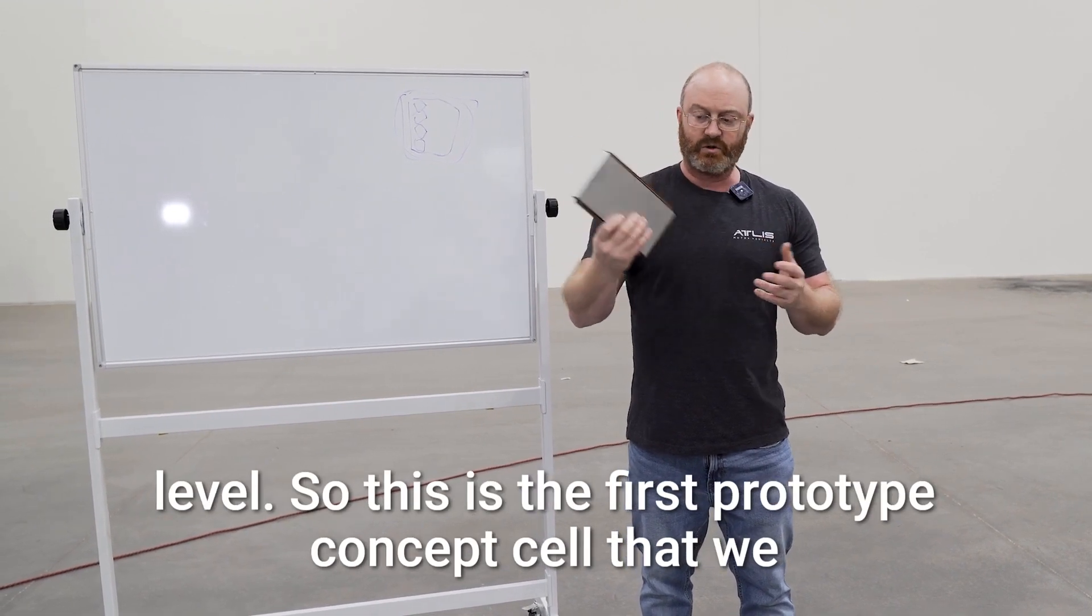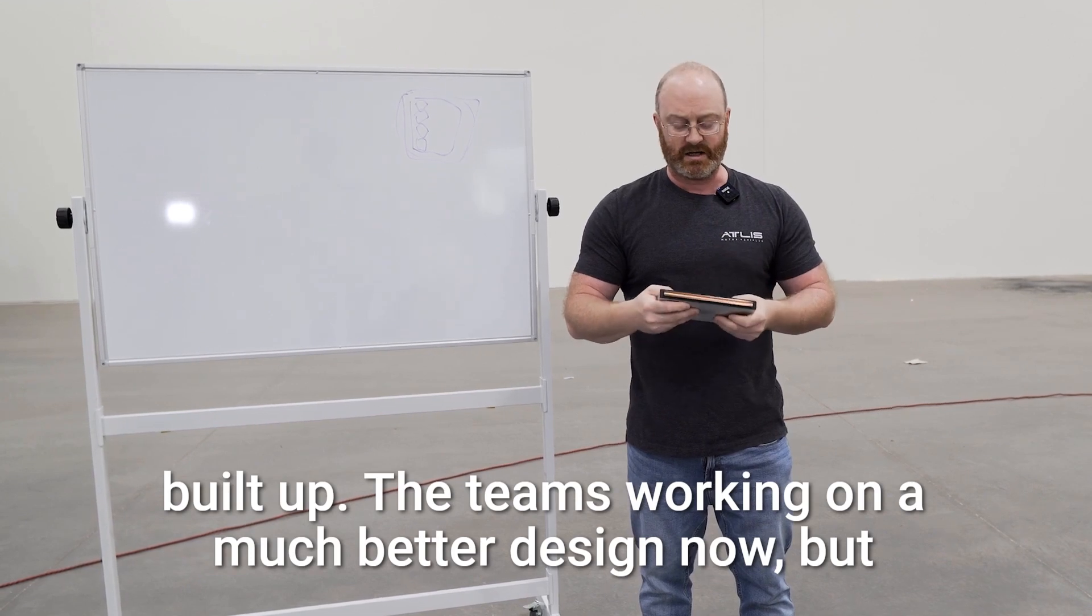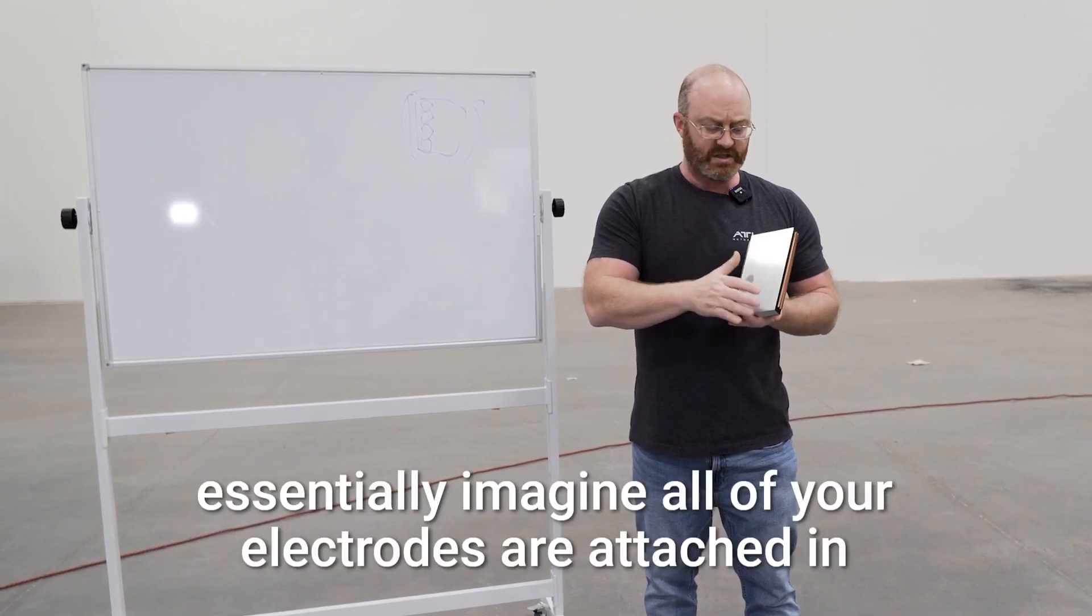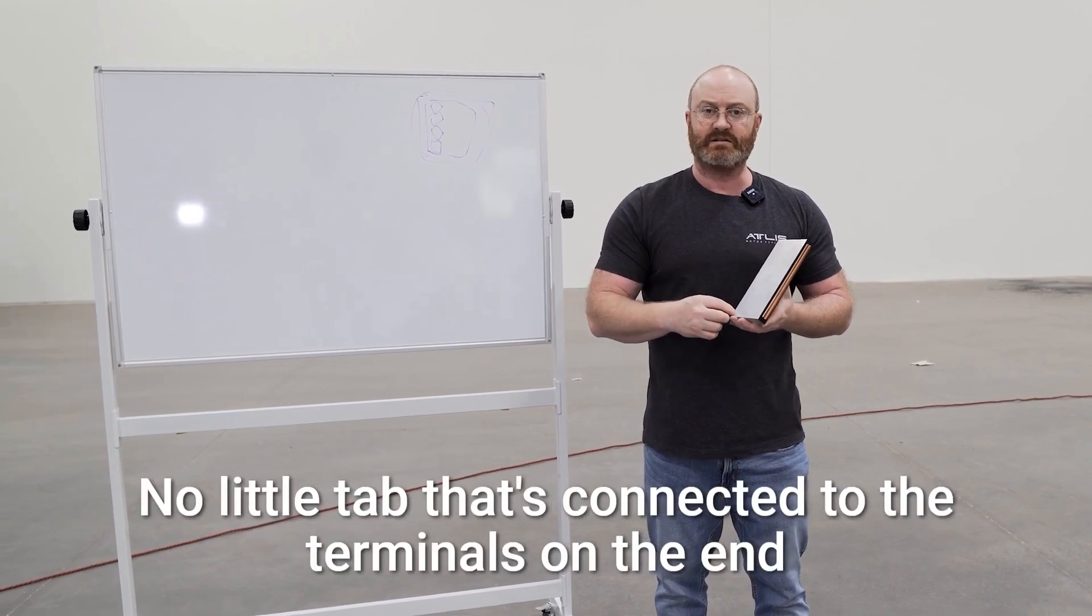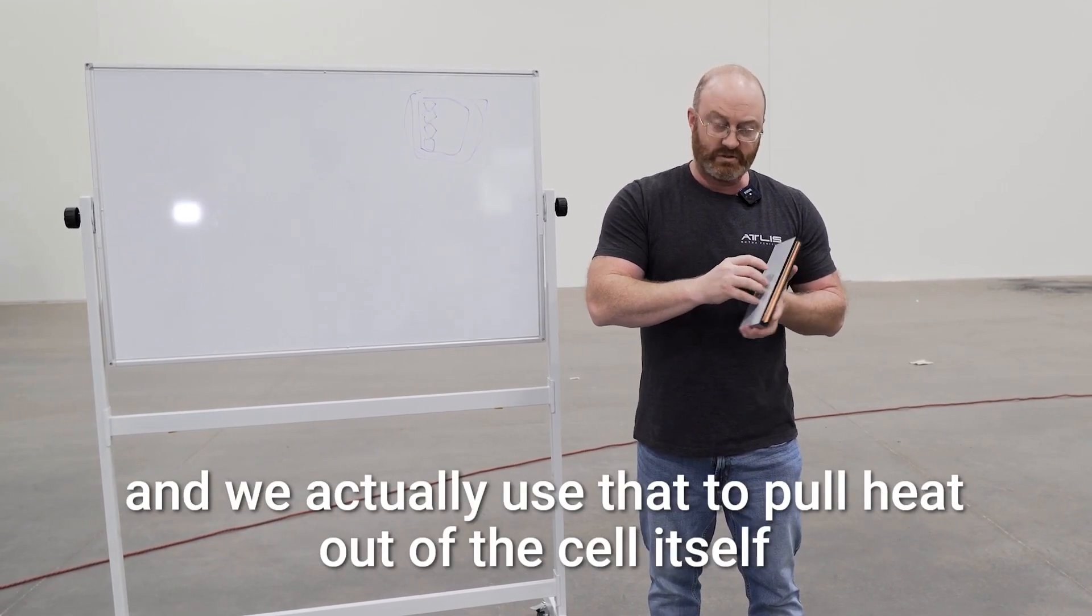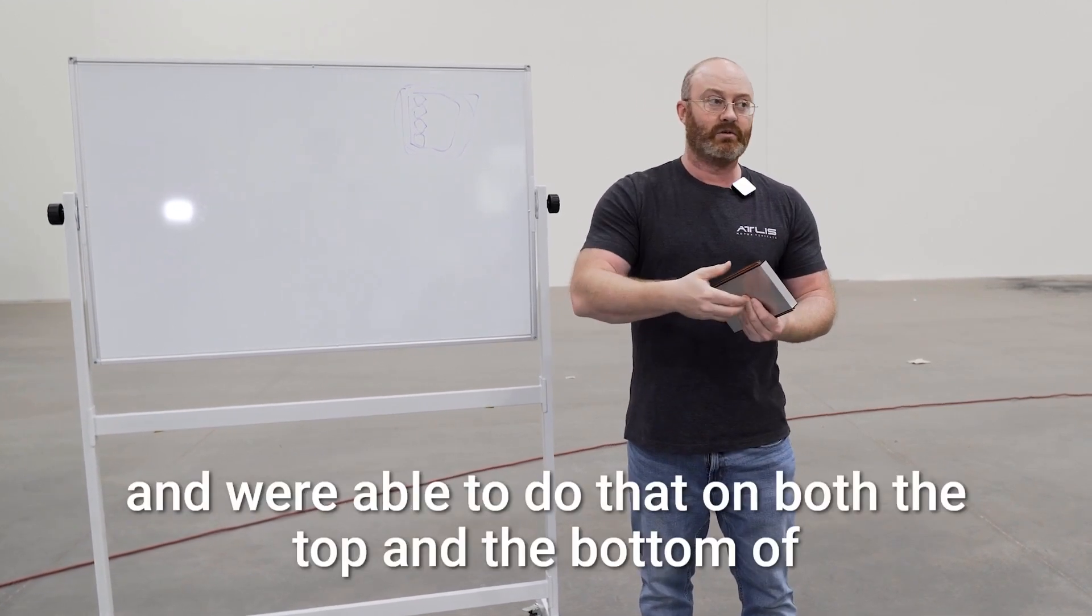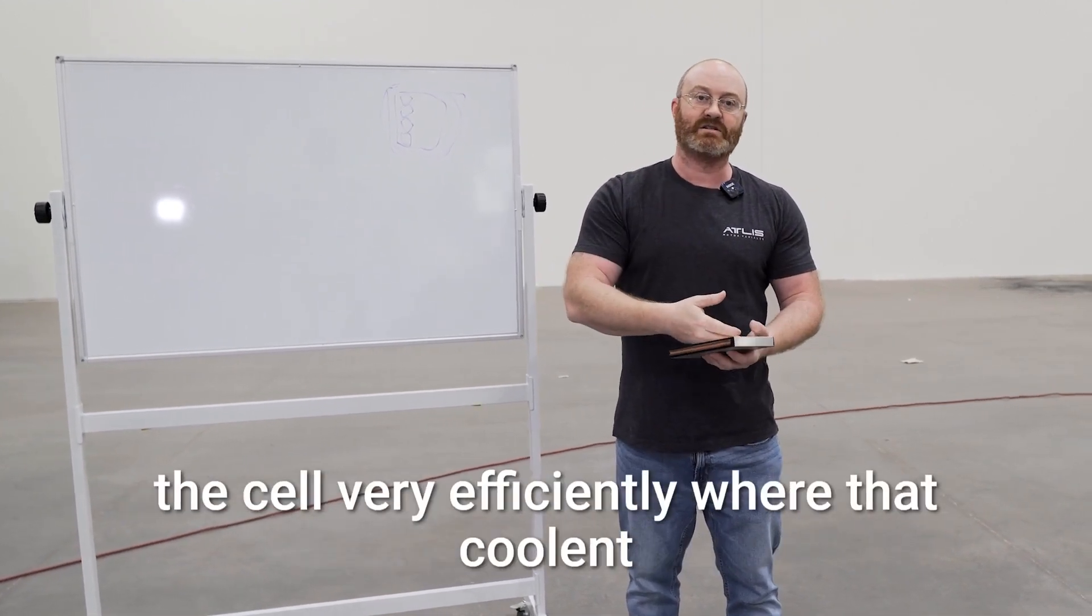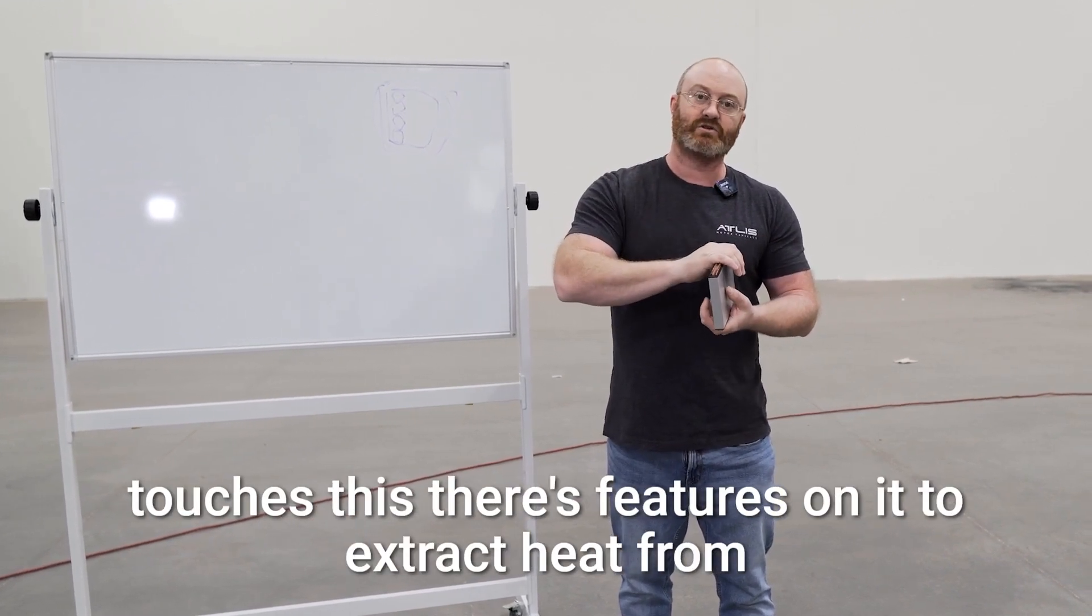So this is the first prototype concept cell that we built up. The team's working on a much better design now, but essentially imagine all of your electrodes are attached in here with no tabs. No little tab that's connected to the terminals on the end, and we actually use that to pull heat out of the cell itself. We're able to do that on both the top and the bottom of the cell very efficiently where that coolant touches this. There's features on it to extract heat from it.